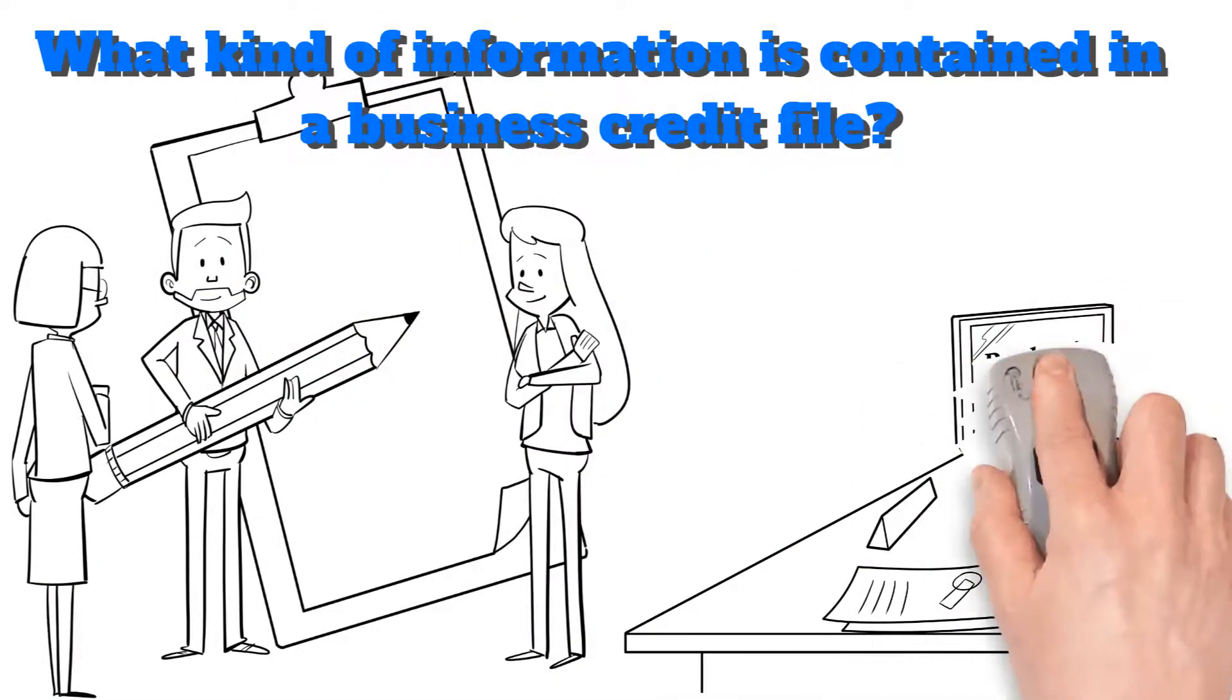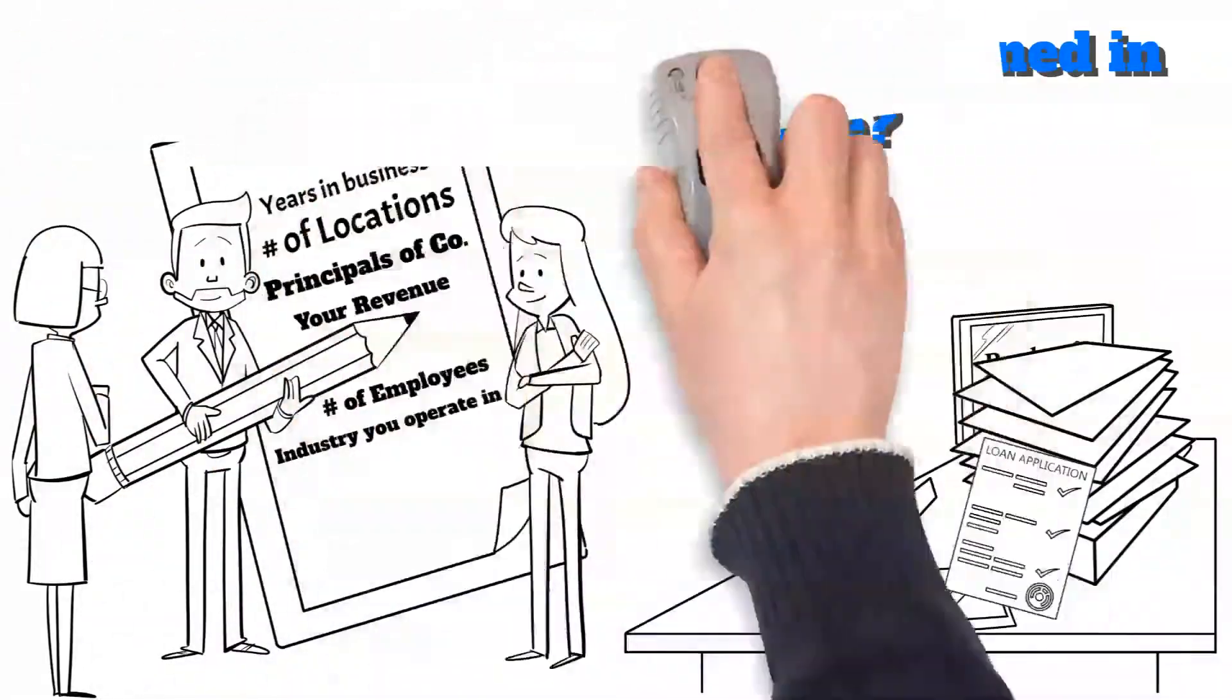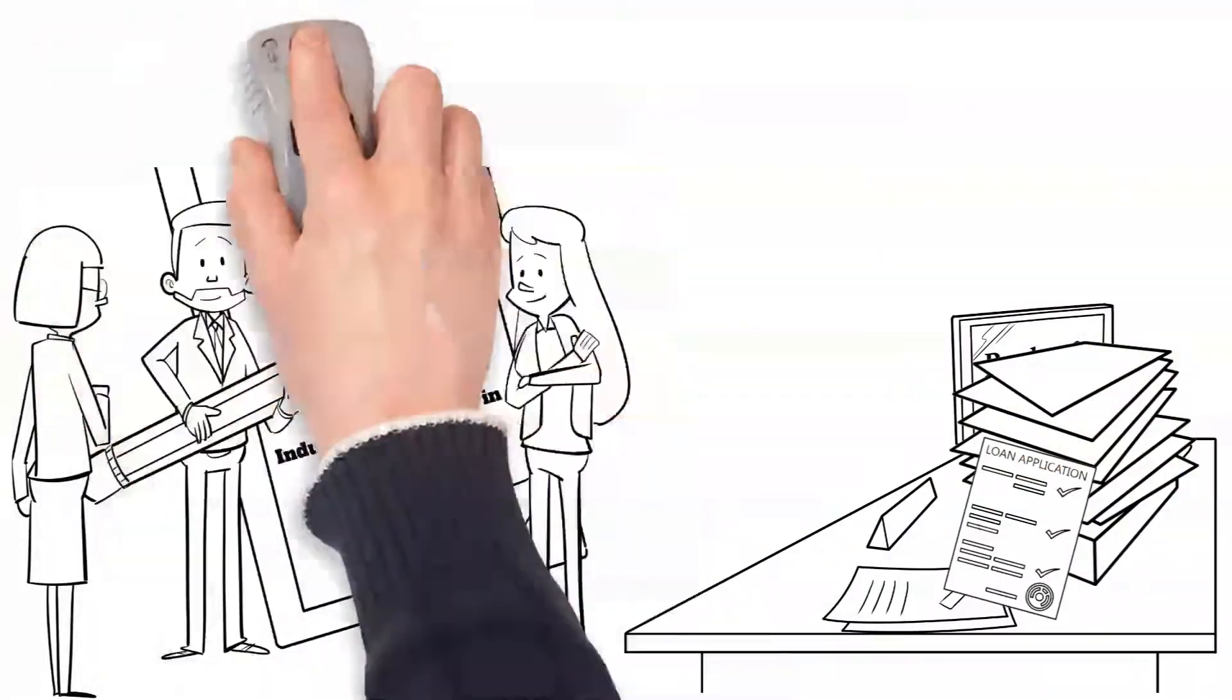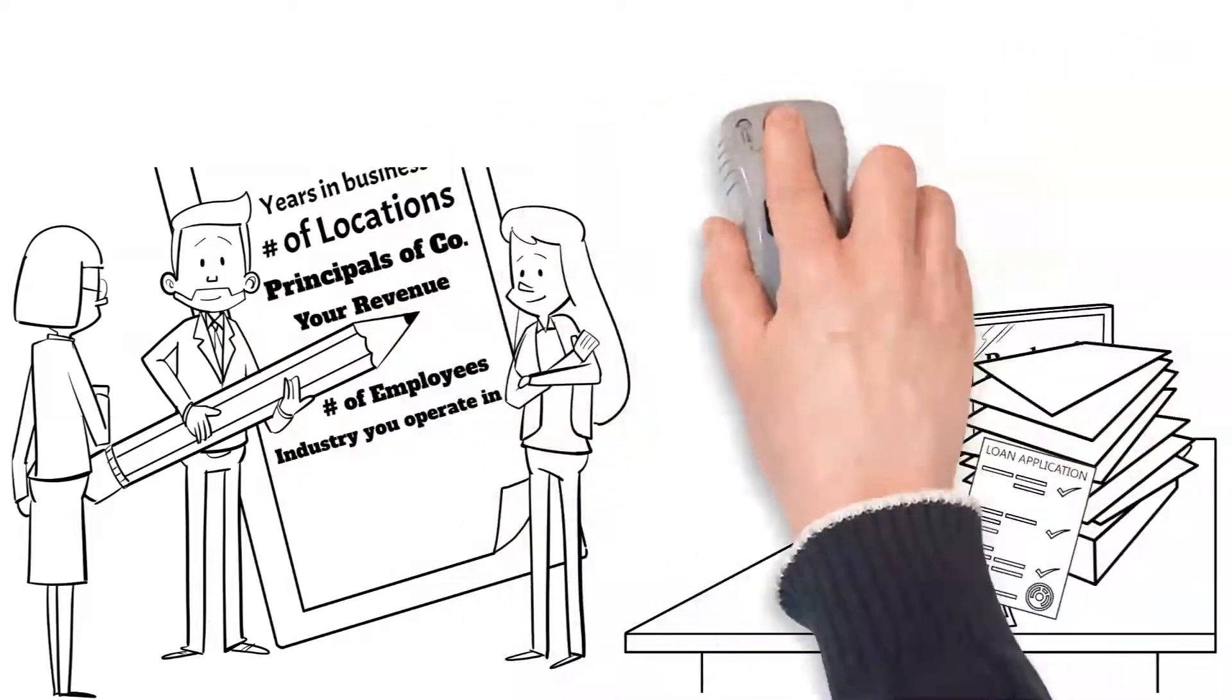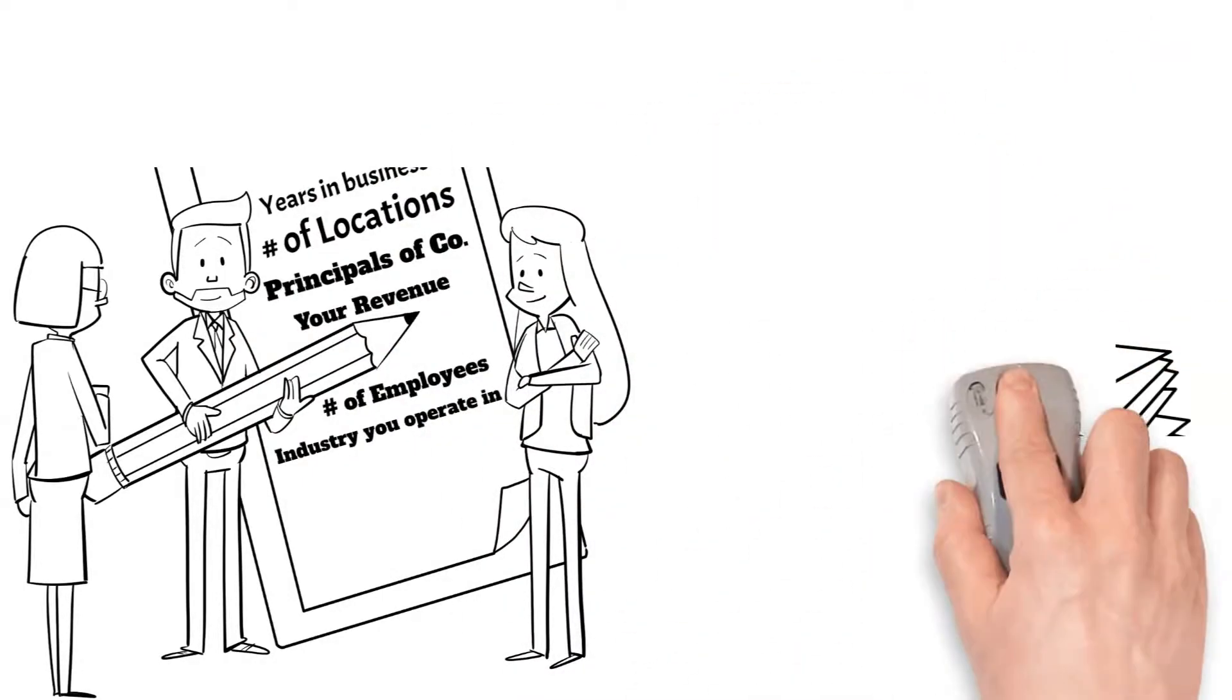Information such as how long you've been in business, how many locations you have, who the principals of the company are, your revenues, how many employees you have, the industry you operate in, and other similar information is contained in your business credit files.